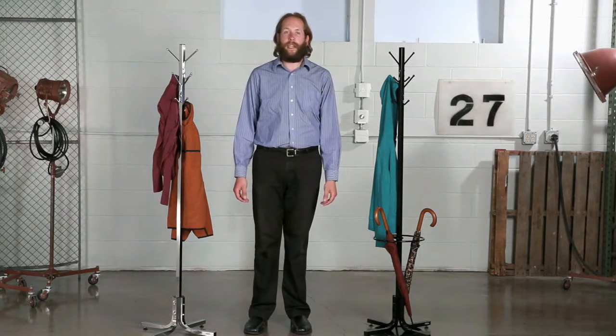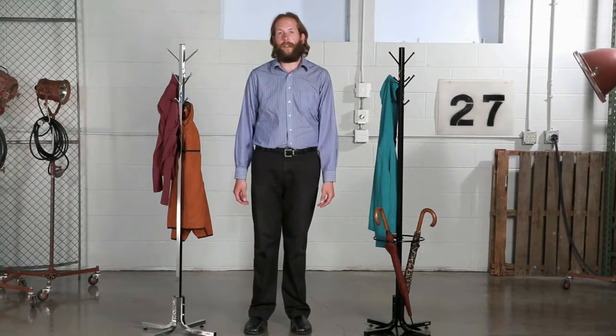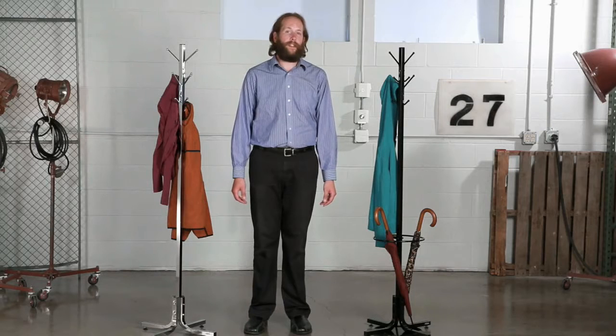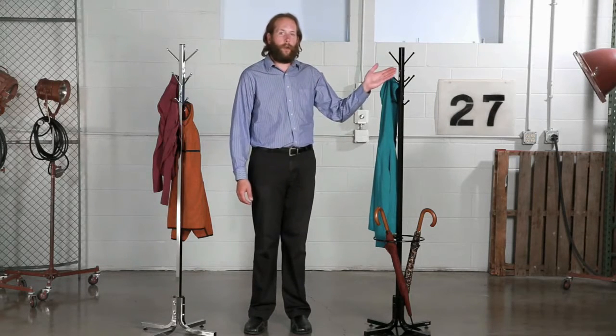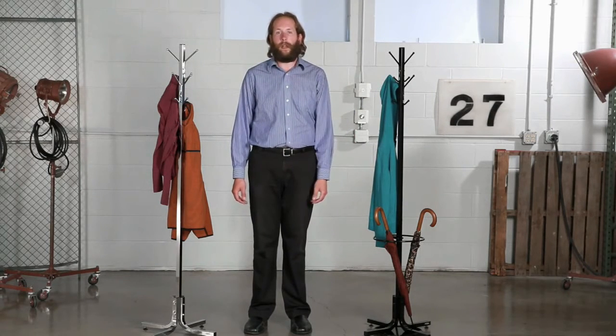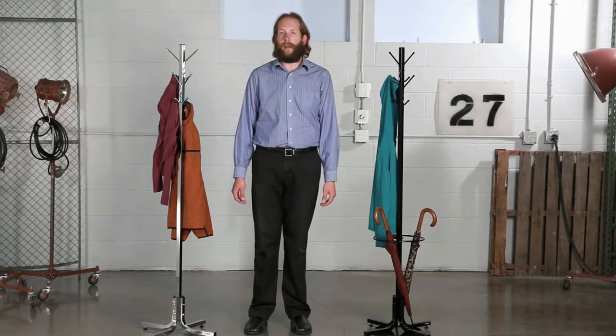Dress up with the Steel Costumer in either a black or chrome finish. The freestanding Costumer features four double hooks that securely hold up to eight garments and is available with or without an umbrella rack.